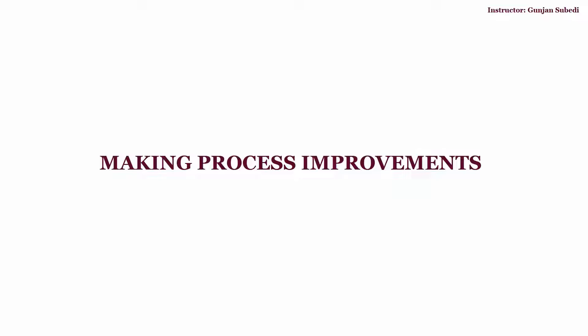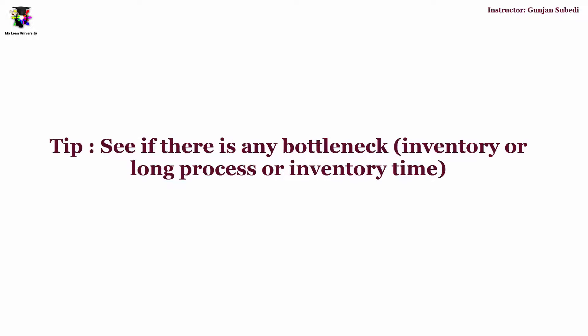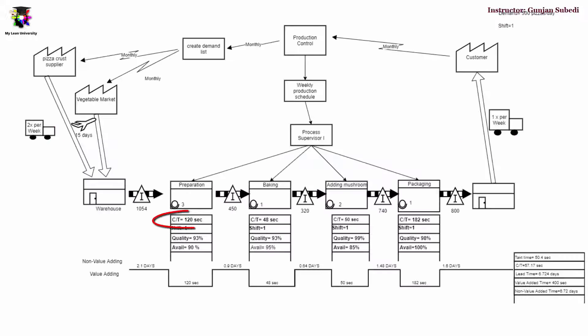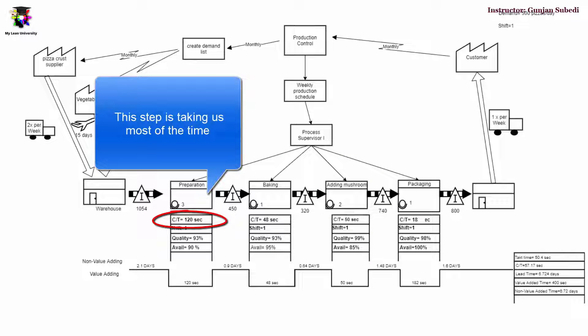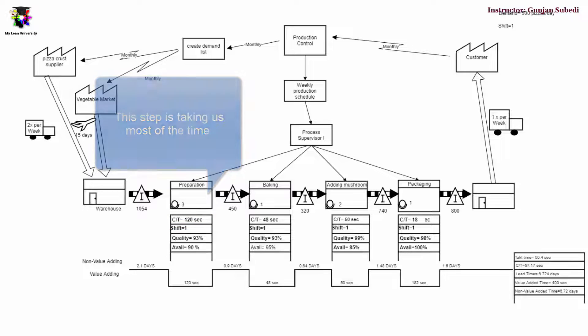The first improvement that we can look at in the value stream map is making improvement in the process. We should see if there are any bottlenecks in the process. If a certain process is taking a long time and has a huge inventory, we should understand that that process is a bottleneck — it's taking a long time to deliver the service or finished product to the customer. For example, it seems like the bottleneck is in the preparation step of the pizza, which was for a service-related business.